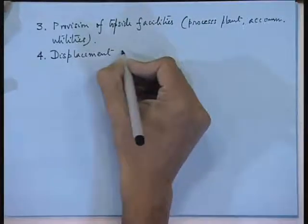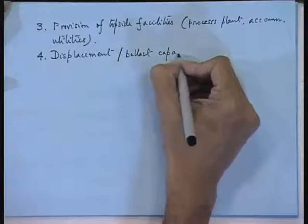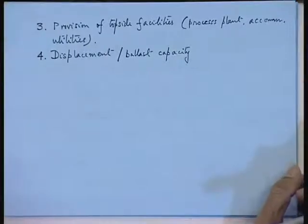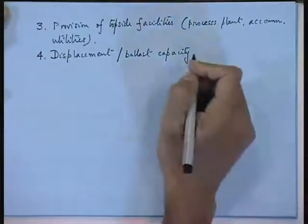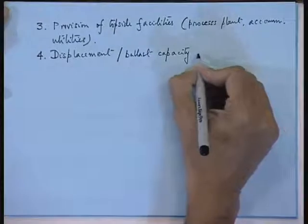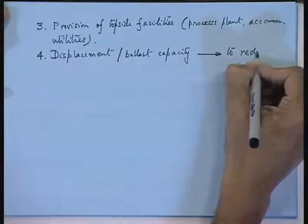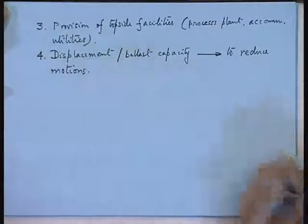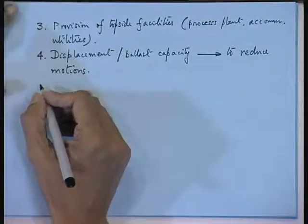Remember, hull sizing is the job of the naval architect, while production and process layout is done by chemical or mechanical engineers. Displacement and ballast capacity are essentially provided to reduce motions. In offshore systems, the main job is to reduce motions; otherwise it hampers production rate and may force a platform shutdown.